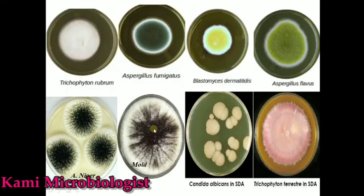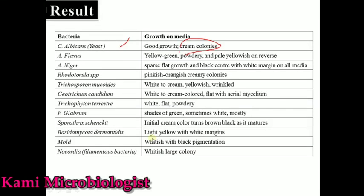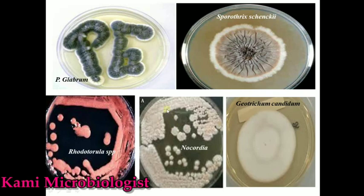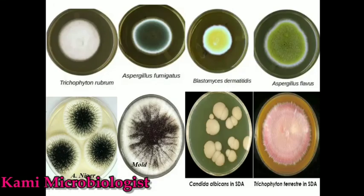Nocardia, which is actually a filamentous bacterium, mostly produces large whitish colonies — as you can see, these are the Nocardia colonies with whitish appearance. So this is all about SDA media. I hope you understand. Thanks for watching.